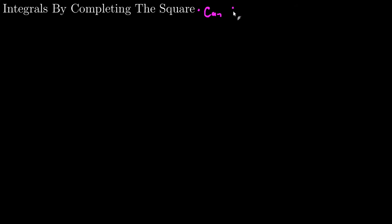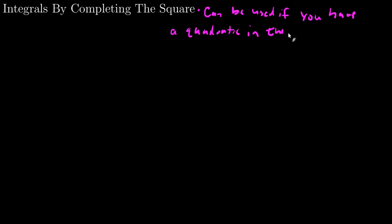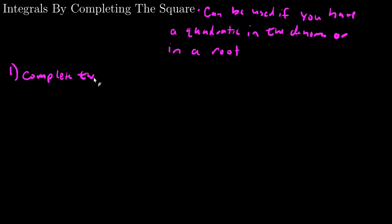Now let's look at how we take integrals by completing the square. This technique can be used when you have a quadratic in the denominator or in a root. The process is: first, complete the square. Second, do the trig substitution. This covers what we did for trig substitutions a few videos ago.